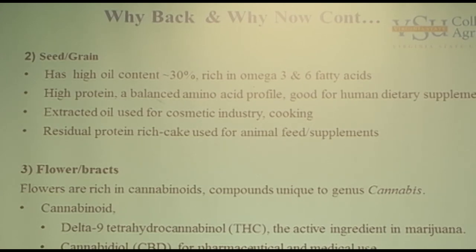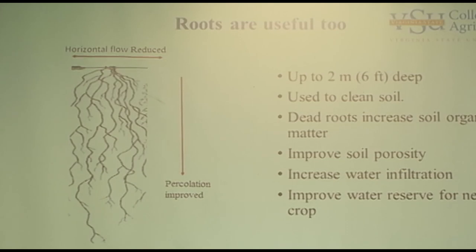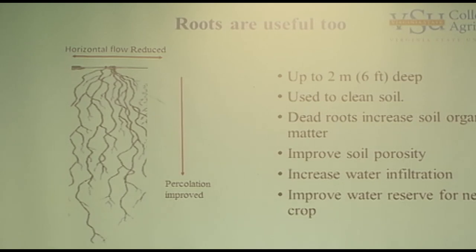For the floral components, that's where the THC is found. But for industrial hemp, different related compounds are extracted from that. The grains, the seeds, the stalks are all used for various products. The roots are also useful, especially if you are using industrial hemp in a rotational pattern with other crops.